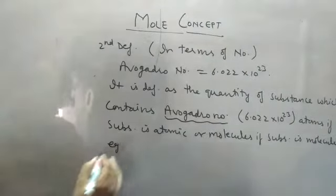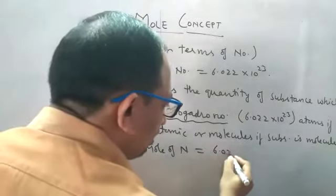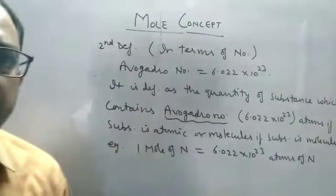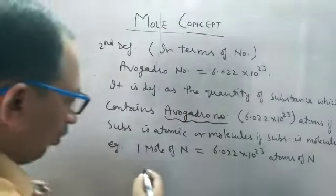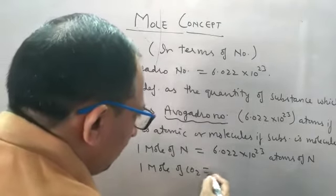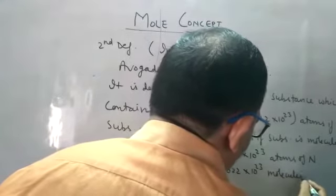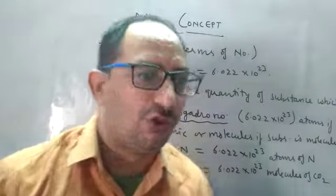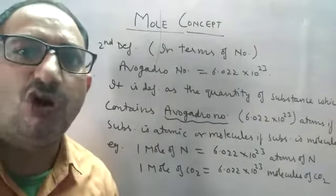For example, one mole of nitrogen contains 6.022 × 10²³ atoms of nitrogen — so saying one mole of nitrogen or that specific number of atoms both represent the same thing. Similarly, one mole of CO₂ contains 6.022 × 10²³ molecules of carbon dioxide. Both expressions represent the same quantity. That is the second definition in terms of number.